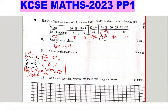Now let us use the formula to calculate the median. L is the lower class boundary of the median class. The median class is 60 to 69, so the lower class boundary is 60 minus 0.5, which gives 59.5. n is the total frequency — 100 divided by 2 gives 50. cf is the cumulative frequency above the median class, which is 46, since the cumulative frequency of the median class is 78 and the one above it is 46.